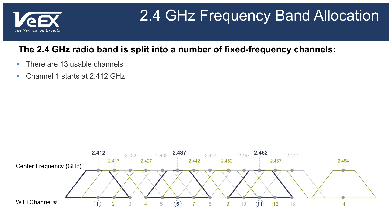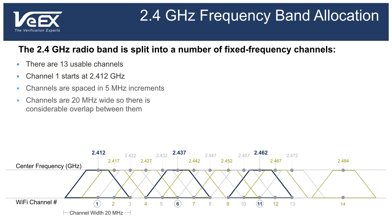802.11 RF modulation techniques require about 20 MHz in channel width to operate, but since the channels are spaced only 5 MHz apart, there is significant overlap and interference between adjacent channels. This is why, in the US, it's recommended that equipment be deployed on channels 1, 6, or 11, which are the only non-overlapping channels.